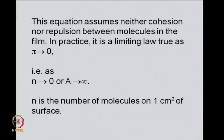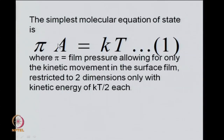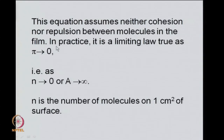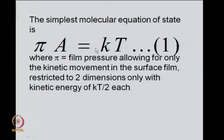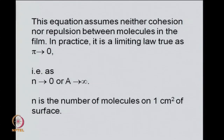In that sense, it is a limiting law, true only when pi tends to 0 — when the surface pressure tends to 0 — or equivalently when A tends to infinity. So the area available for a surface molecule tends to infinity, or the number of molecules in the surface approaches 0. Under these conditions, the film pressure pi is related to area per molecule A by this simple ideal relation, presuming no interaction.